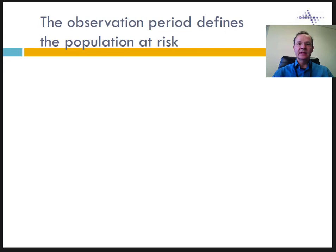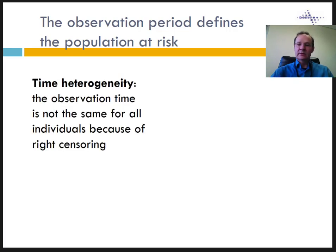All populations are necessarily observed in a limited time period. You cannot observe all people from the origin of the human species to now, and even if you were able to do it, today is necessarily the limit of our observation. This means each and every individual is observed over a different period of time. Those who are dead did not die at the same age, and those who are still alive today do not have the same age either. This is the issue of time heterogeneity.